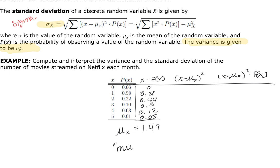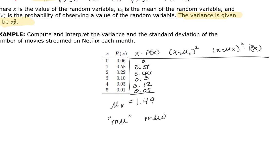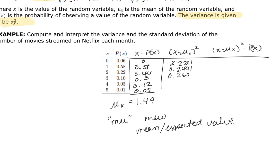Mu is the mean or expected value — make sure you write that down. Now we'll do our deviations. The entries in the (x minus mu)² column are: 2.2201, 0.2401, 0.2601, 2.2801, 6.3001, and 12.3201. In a spreadsheet, you would do equals, then a parenthesis around (B2 minus $D$6) caret 2, using the dollar signs so that when you drag the formula down it always grabs the mean cell.